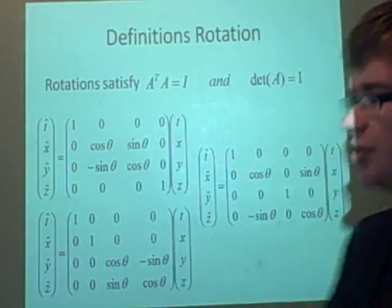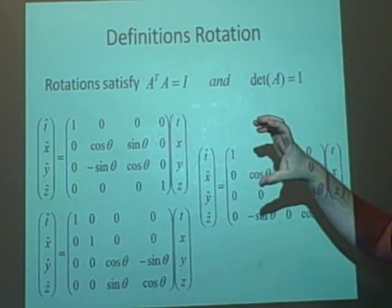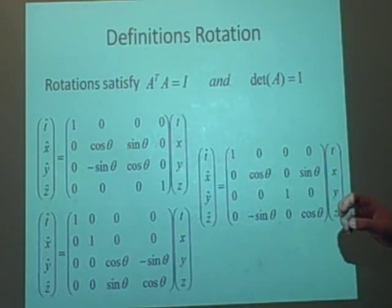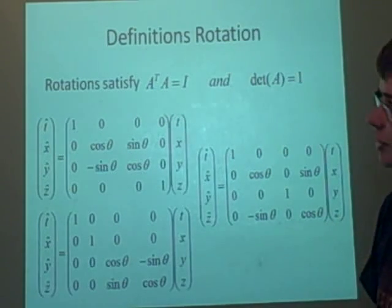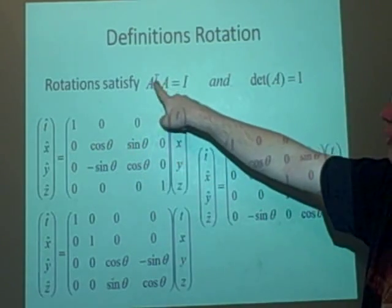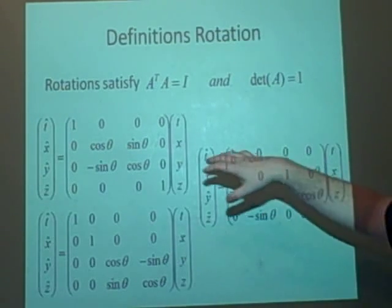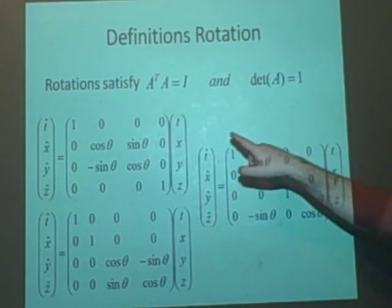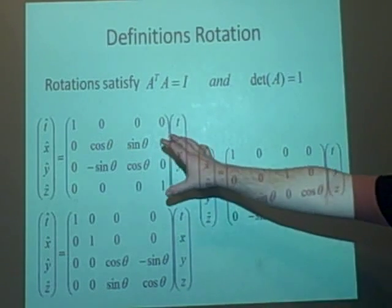Now we get on to rotations. A rotation is just where you are turning the frame in any of the three planes. A rotation has to satisfy these conditions: if you wanted to test if something is a rotation, you'd get the matrix, transpose it, and multiply it by itself to get the identity. And it also has to satisfy that the determinant of the matrix is equal to 1, which will be the case with all these examples.